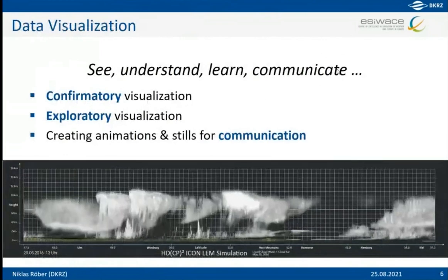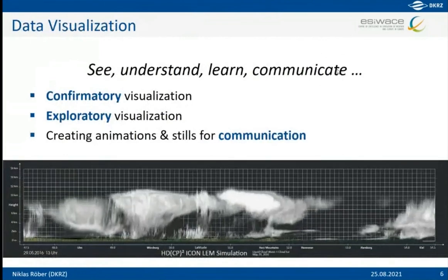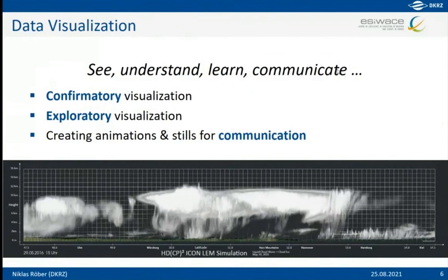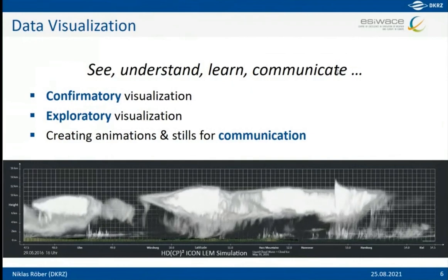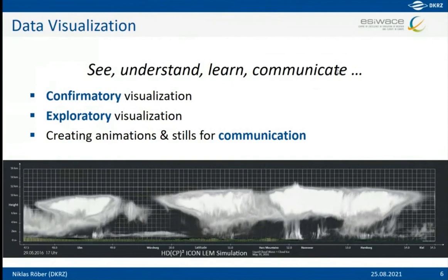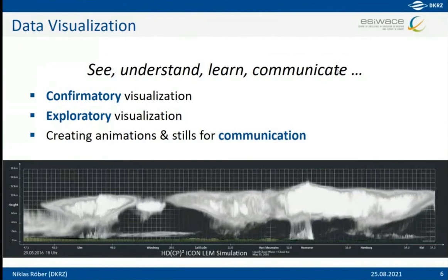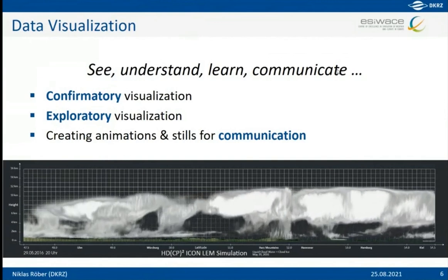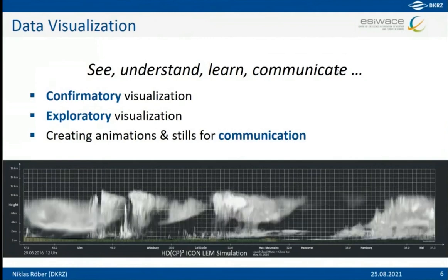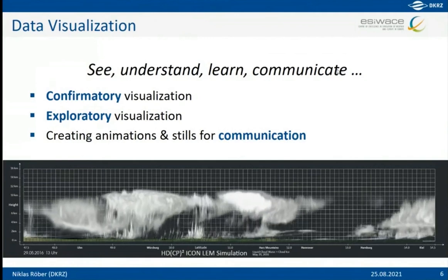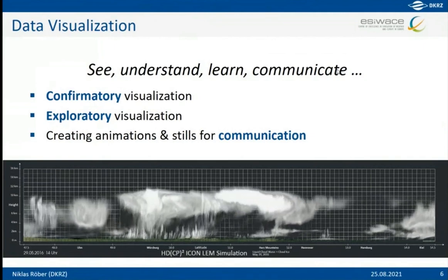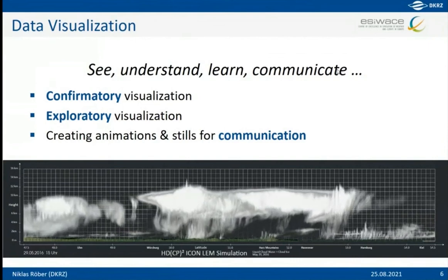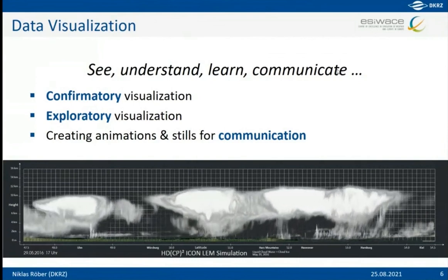Why do we do data visualization in the first place? You can run a simulation and write data to disk, but if you can't look inside and derive conclusions for your research, for politics, and so on, then it doesn't help you. You need to look inside, understand, and sometimes discover new occurrences or correlations. There are basically three forms of visualization: confirmatory visualization, where you check that known features like eddies or jet streams are present.